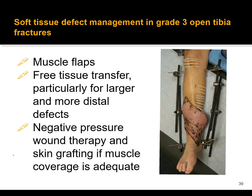In grade three, certainly grade three B open tibia fractures, you have to think about muscle flaps depending on where you are. Traditionally, in the proximal third, you can use a gastrocnemius flap. Coverage in the proximal third would be gastroc — rotational flaps, that is.